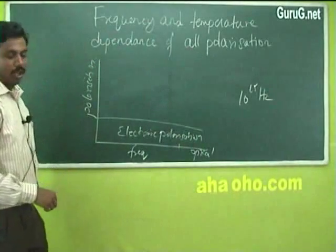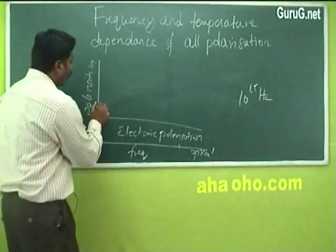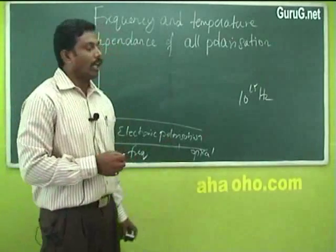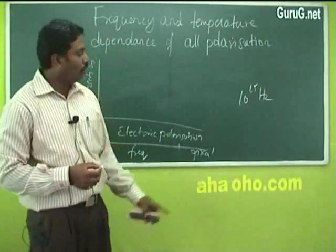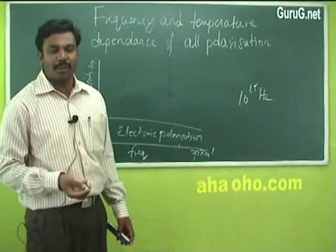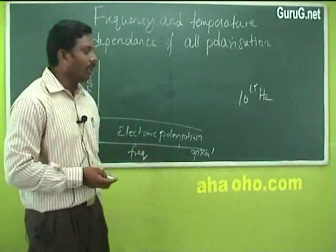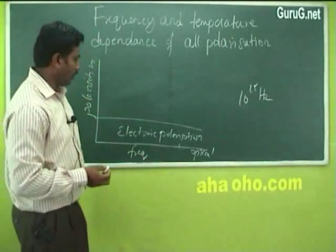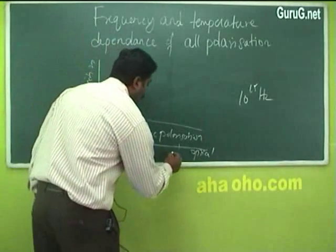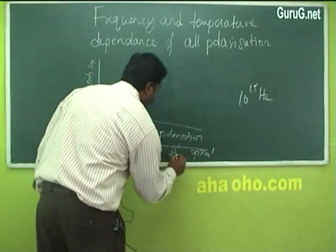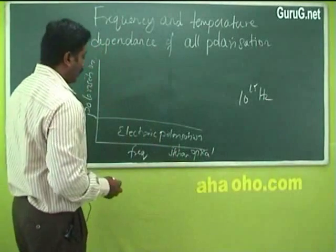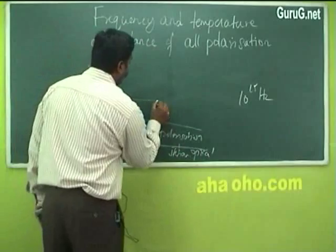Next is ionic polarization. The ions are a bit heavier compared to electrons, so ionic polarization takes place a bit slower compared to electronic polarization. This ionic polarization occurs in the infrared region and the radio region.